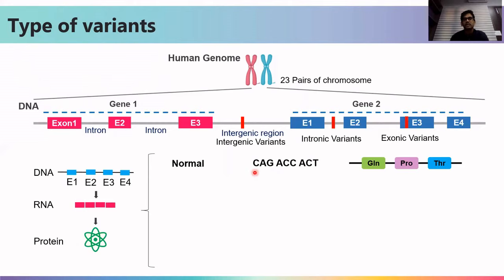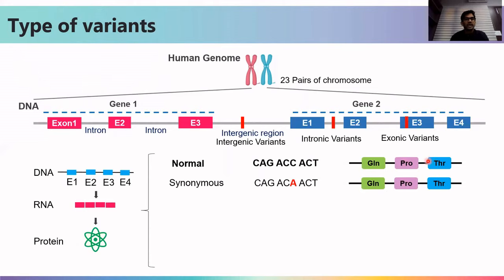A 3-nucleotide codon codes for a single amino acid. For example, CAG codes for glutamine, ACC for proline, and ACT for threonine. If there is a mutation at the sixth position — a change from C to A — but the amino acid remains proline to proline, this is known as a silent or synonymous mutation.